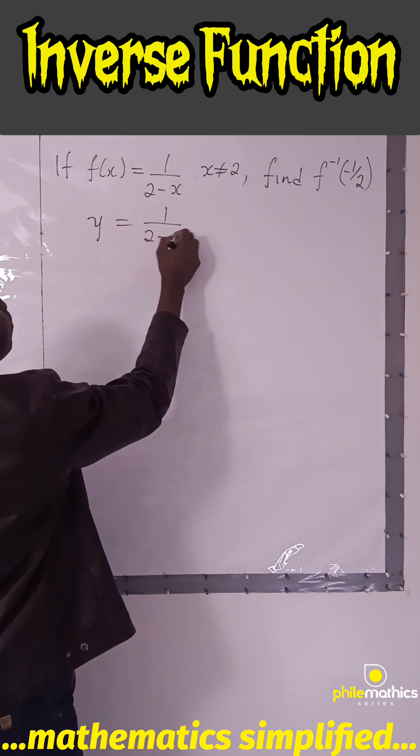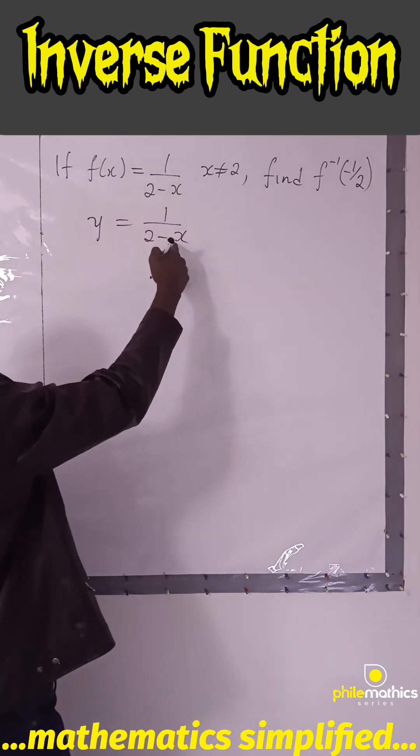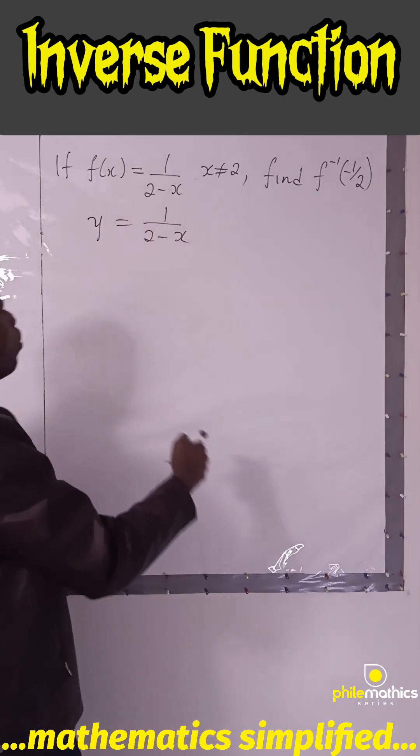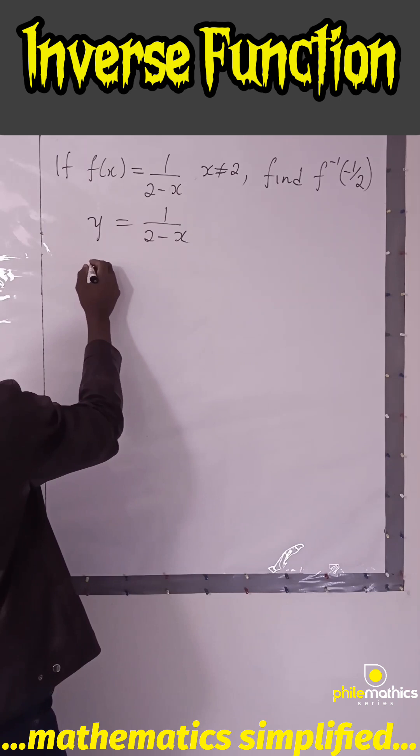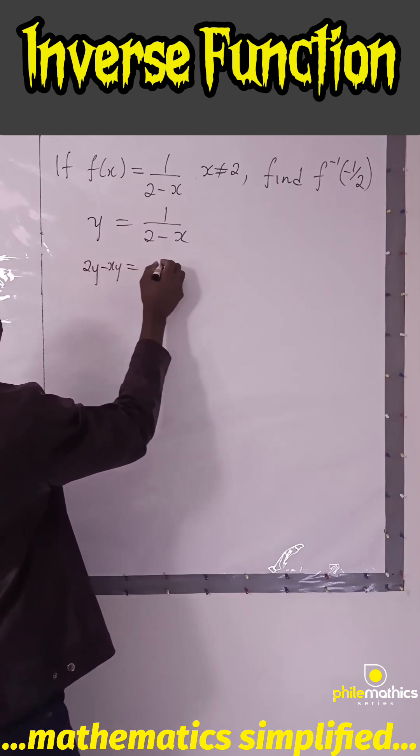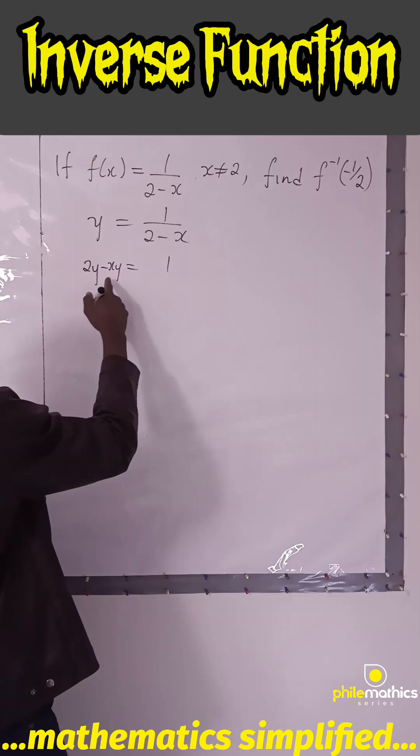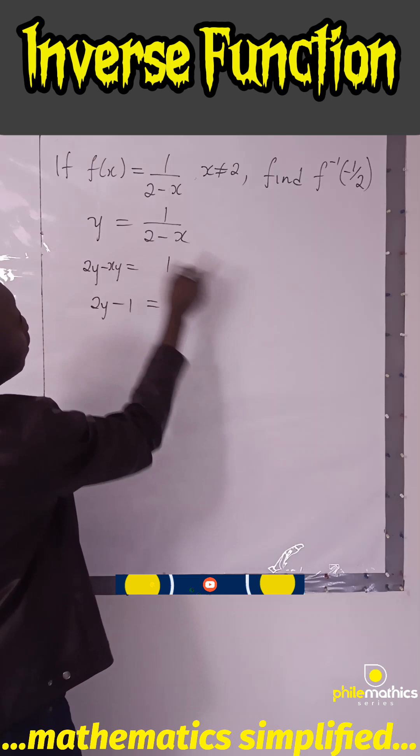Make x the subject of the formula. If you cross multiply, you have 2y - xy = 1. Then this will be 2y - 1, taking the xy term to the right-hand side.